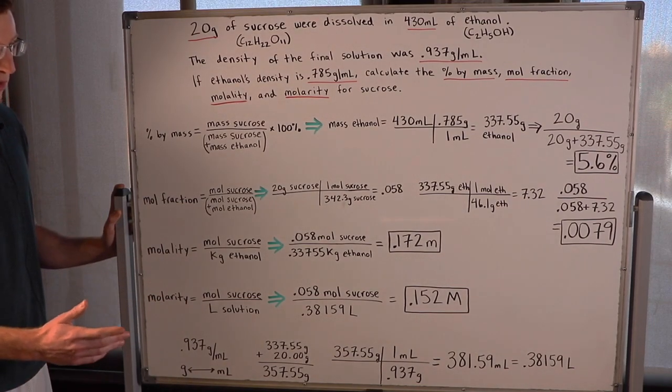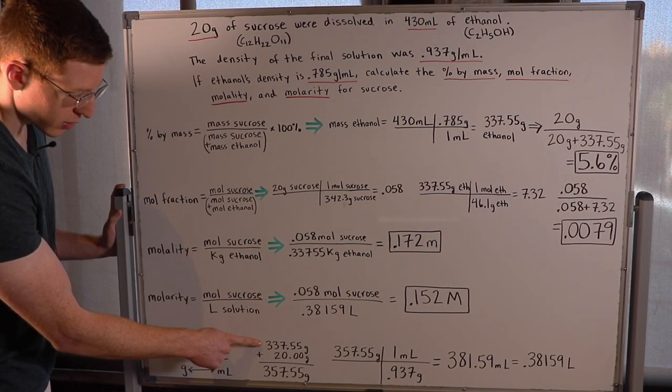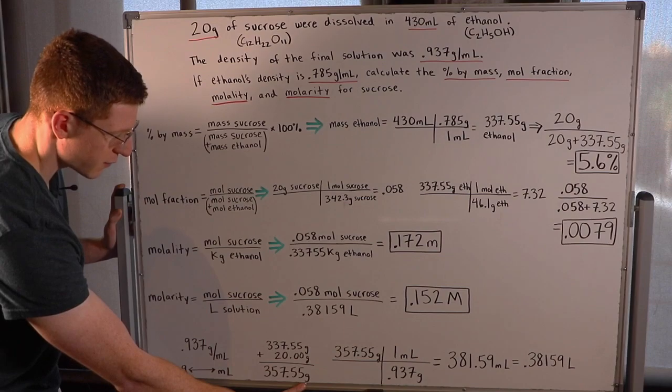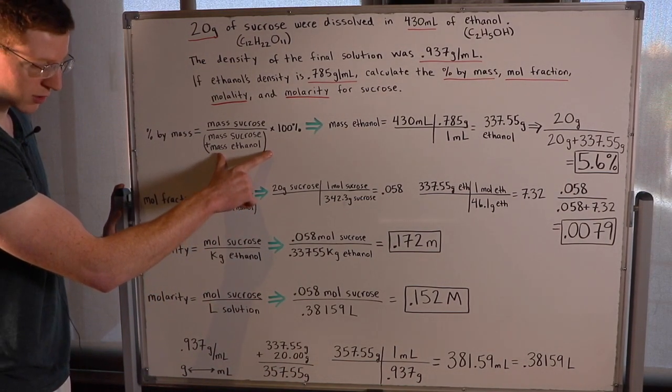So in this case, we want the volume of total solution. And we have the total mass of the solution, we already found that it's 337.55 grams plus 20 grams, for a total of 357.55 grams. We already found that up here when the denominator was the total mass of our solution.